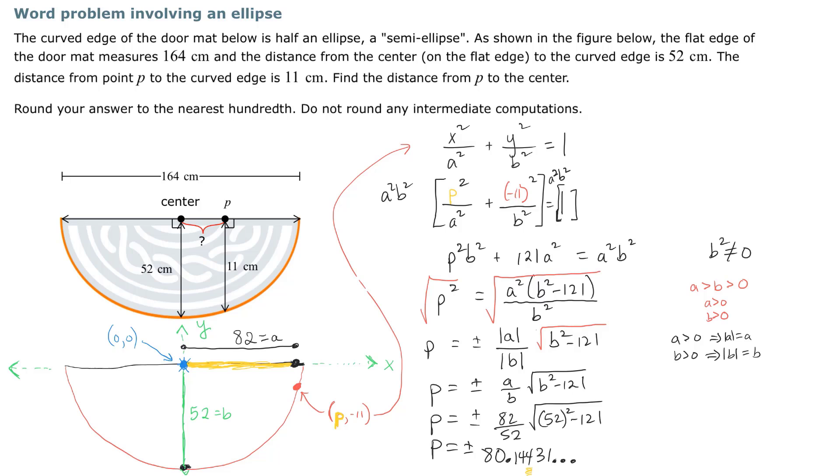Now, we're really ready to answer this question. Notice that P is greater than zero as well. So the distance from P to the center is 80 decimal 14 hundredths, or 80 and 14 hundredths centimeters.